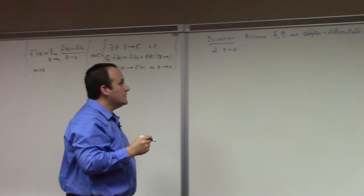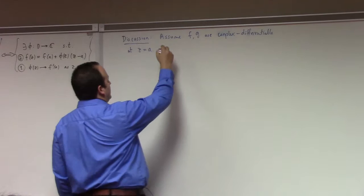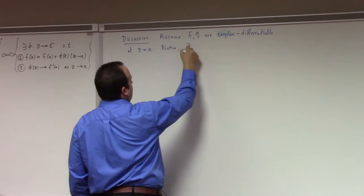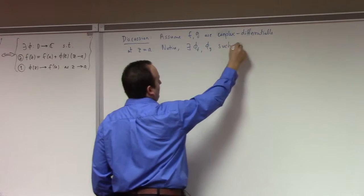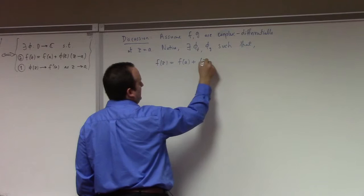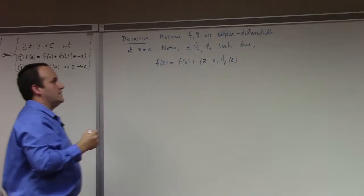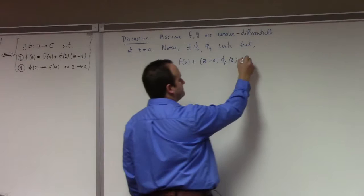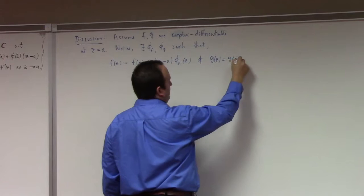The limit of the difference quotient exists, so we can apply the theorem of Carathéodory twice. There exist phi sub f and phi sub g such that f(z) equals f(A) plus (z minus A) times phi_f(z), and likewise g(z) equals g(A) plus (z minus A) times phi_g(z). These are kind of like tangent line approximations.